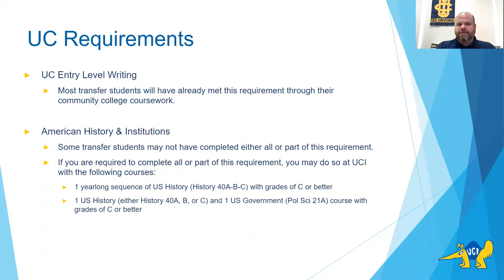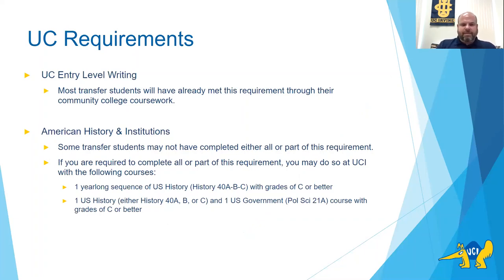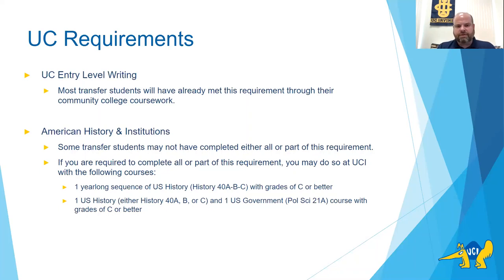The first UC requirement is called UC Entry Level Writing. Most transfer students, if not all, already have this satisfied — completing one English composition course typically meets this requirement. The next requirement is American History and Institutions. This UC requirement means every student must have at least a course in American history and a course in American government. You may have completed both from your previous college; if UCI admissions certifies it on your transcript, you may have already satisfied this. We won't know officially until fall quarter begins, as transcripts are still being evaluated.